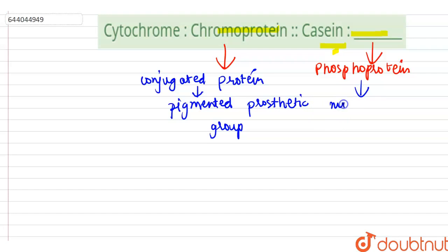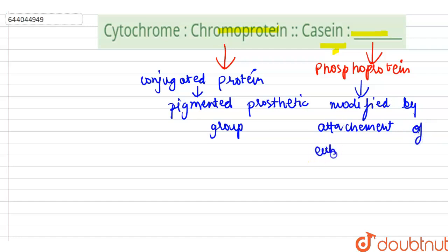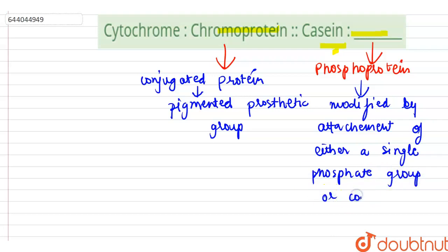Phosphoprotein is modified by the attachment of either a single phosphate group, or a complex molecule such as 5-phospho DNA, through a phosphate group.